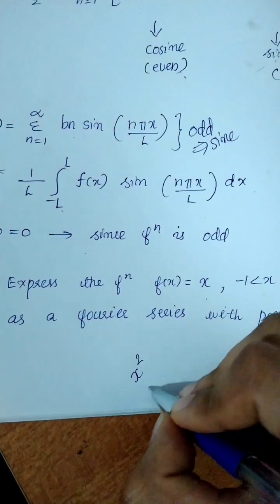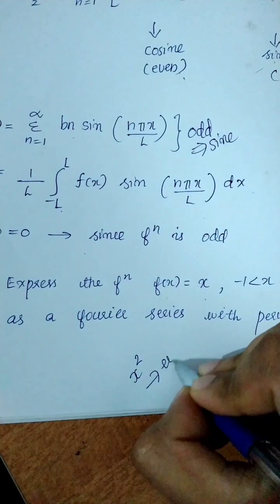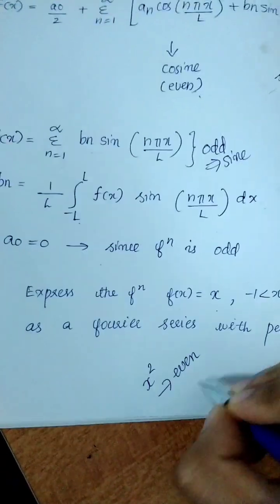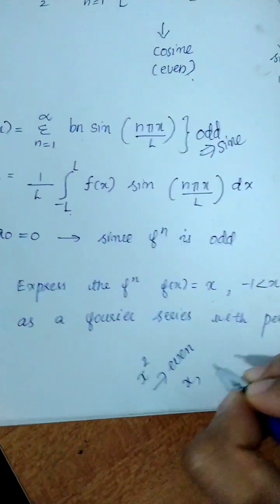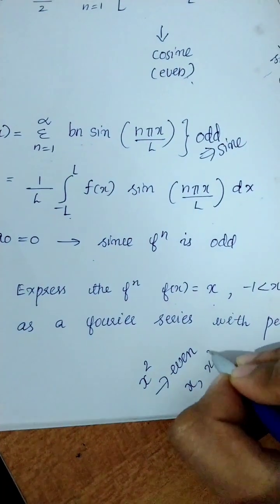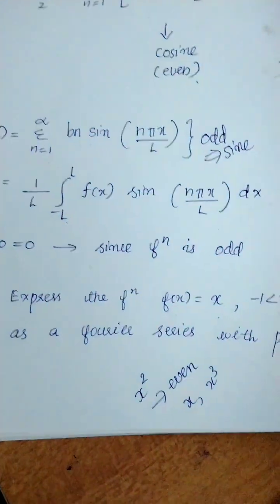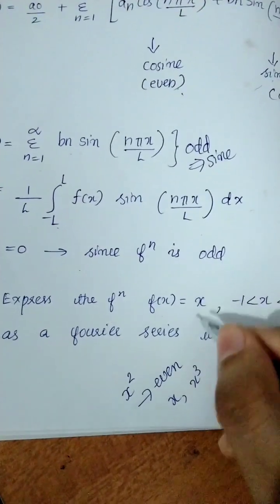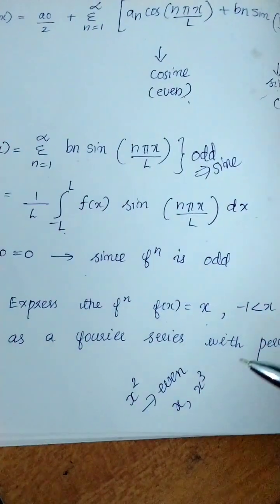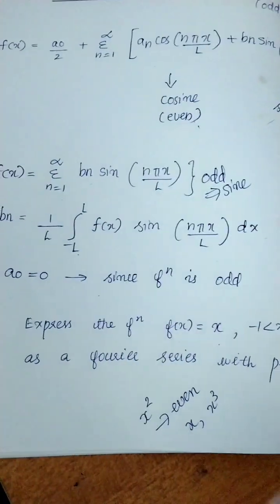If x squared, that is the even function. F of x equal to x is the odd function. Since f(x) = x is odd, we will represent it using a sine series.